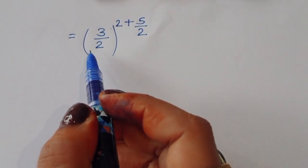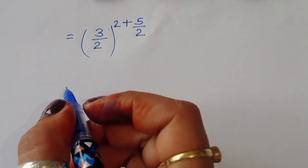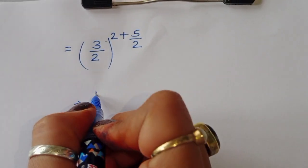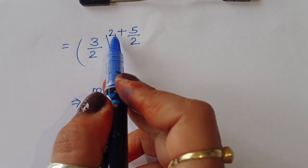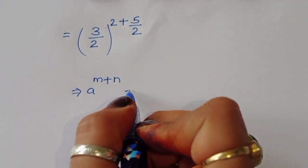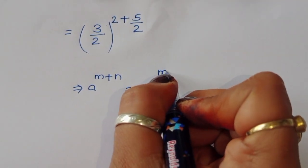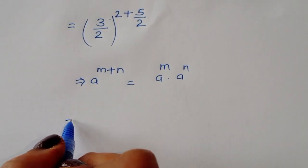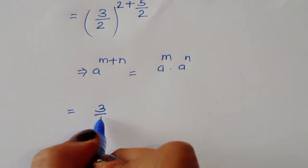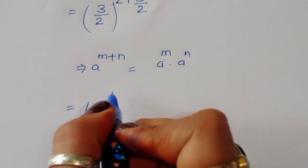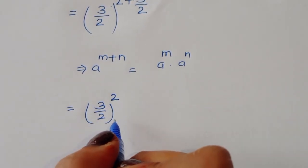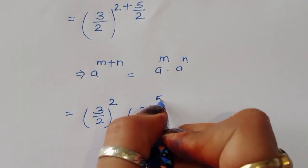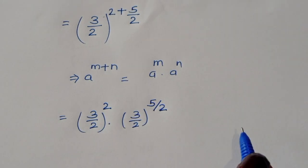Now we have to apply again one formula: if a^(m+n) is given, we can write this as a^m times a^n. Using this formula, we can write this as (3/2)^2 times (3/2)^(5/2).